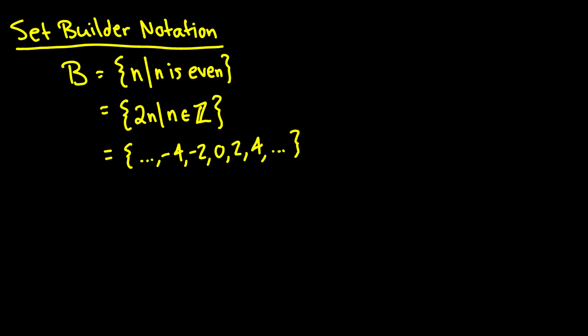Where we can say, okay, if we want to write all of the even integers, which we have here, then there's a couple ways we can write this. We can say that B is the set of N such that N is even.